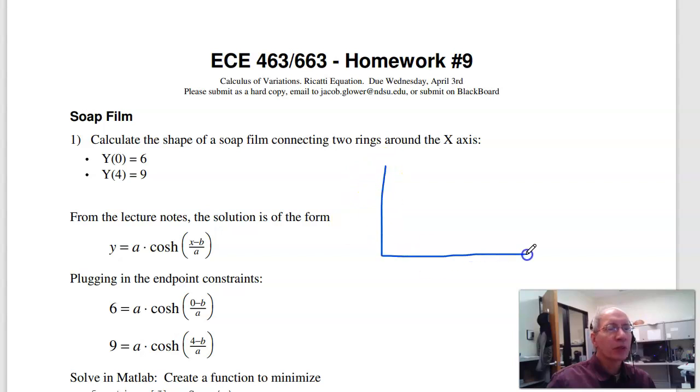The first problem is calculate the shape of a soap film. Soap films minimize surface area, so if we have one disk at 0 with radius 6, and at 4 with radius 9, what's the shape of the soap film? I want to find the shape that minimizes surface area.